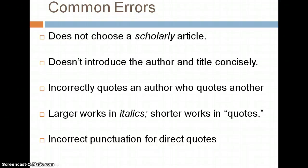I'm going to talk about some of the common errors that students make when they're completing the summary paper assignment, in an effort to hopefully help you avoid some of these mistakes that students before you have made. The first mistake students typically make is they don't choose a scholarly article. It's really important for this assignment that you have a scholarly article, not a newspaper article, not an article from a popular magazine, but something from a scholarly journal.